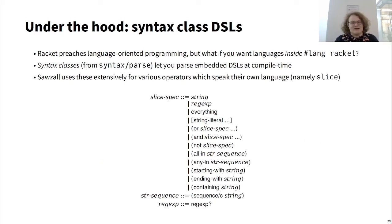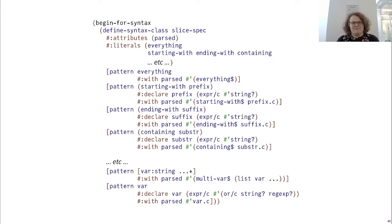Sozl uses a lot of things called syntax class DSLs. Racket preaches language-oriented programming, but sometimes you want languages within hash-lang Racket without having to use a separate one. Syntax classes from syntax-parse let you parse embedded DSLs at compile time. Sozl uses these extensively for various operators that speak their own domain-specific language, namely the slice operator, which follows the grammar you see here. Some of these actually have conflicts with Racket functions, but at compile time we use the syntax class called slice-spec, and it takes all of our slice patterns and turns them into a structure that our regular function can take, parsing everything to everything-s and containing to containing-s, defined as a recursive structure.